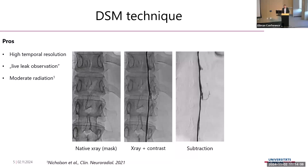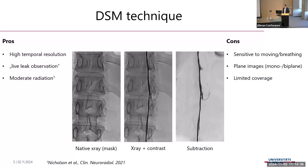The pros of this technique are especially the high temporal resolution and a live leak observation. The radiation dose is reported to be moderate compared to CT myelography, which is often a little more. The drawbacks are that this technique is very sensitive to motion and breathing artifacts, and we only acquire images in mono or biplane acquisition with limited coverage due to the detector length.